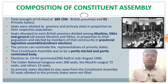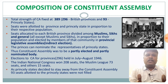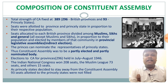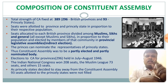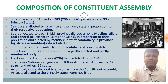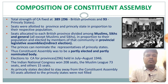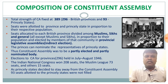The composition of the Constituent Assembly: the total strength was fixed at 389. Of these, 296 seats went to the British Provinces — directly ruled by the British — and the remaining 93 went to the Princely States, ruled by princes but indirectly under British control. Seats were allotted to each province and princely state in proportion to their population, approximately one seat per one million people.